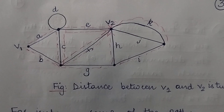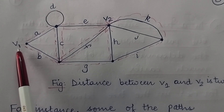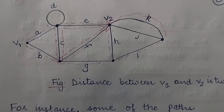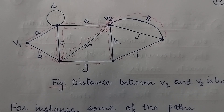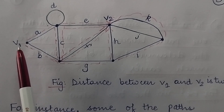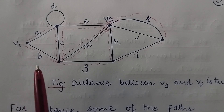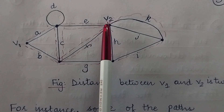If I consider this particular graph and want to find out the distance between the two vertices v1 and v2, first of all you must know that this is a general graph and not a tree. A tree is a connected graph where there are no circuits and there does not exist more than one path between any pair of vertices. But in case of a general graph, we can have more than one path between any two pair of vertices.